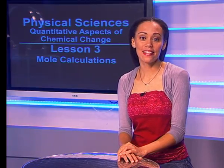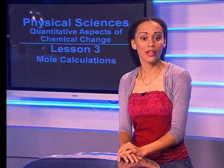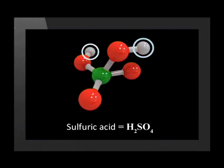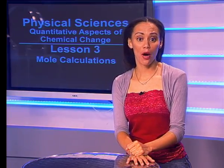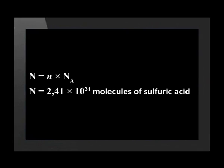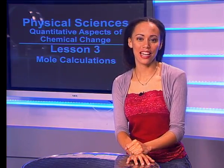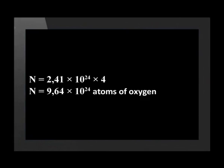Let's take this calculation a step further. Determine the number of oxygen atoms in 4 moles of sulfuric acid. Looking closely at the structure of one molecule of sulfuric acid: there are four oxygen atoms, one sulfur atom, and two hydrogen atoms — so there are four oxygen atoms in one molecule. We already know there are 2.41 × 10²⁴ molecules of sulfuric acid in 4 moles. We multiply this by 4 oxygen atoms per molecule: 2.41 × 10²⁴ × 4 gives us 9.64 × 10²⁴ atoms of oxygen in 4 moles of sulfuric acid.